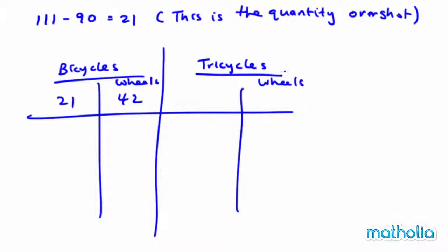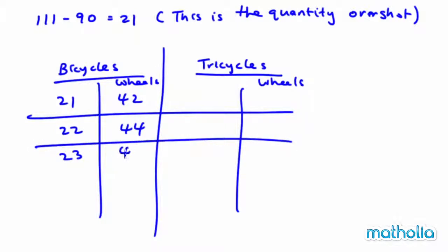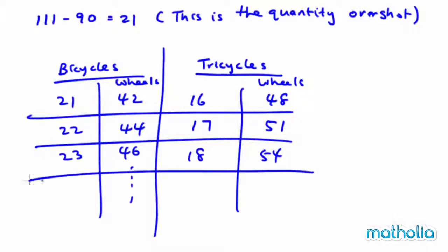Take note — the total quantity must not exceed 37. So if I have 21 bicycles here, if it's 22 it will be 44 wheels, if it's 23 it will be 46, and so on. So if bicycles is 21, I can have only 16 tricycles here because 16 times 3 is 48. If it's 17 tricycles, it will be 51, and so on.